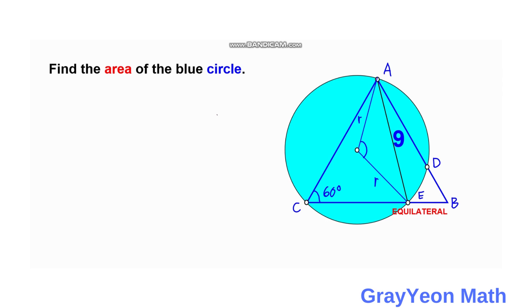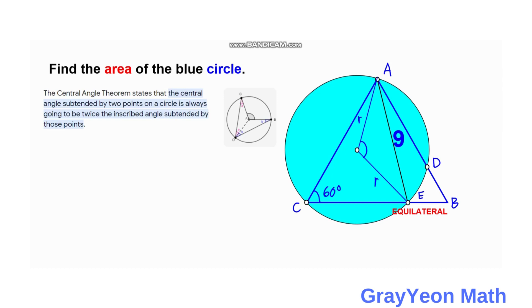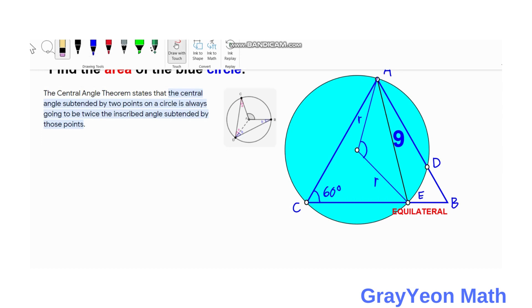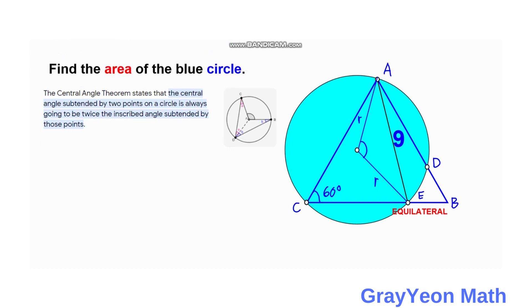Next, we review the Central Angle Theorem. The Central Angle Theorem states that the central angle subtended by two points on a circle is always twice the inscribed angle subtended by those two points. The inscribed angle in our case is 60 degrees, so the central angle will be twice that — therefore it is 120 degrees.